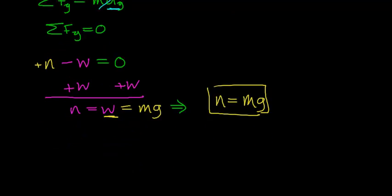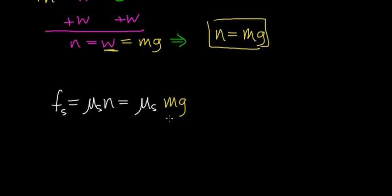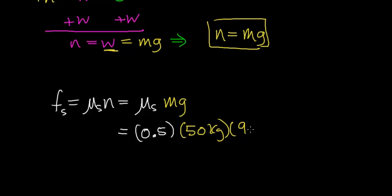Going back to our equation for static friction: the force of static friction equals the coefficient of static friction times the normal force, which equals the coefficient of static friction times mass times gravitational acceleration. In this case, the coefficient of static friction is 0.5 — a unitless number — the mass is 50 kilograms, and gravitational acceleration is 9.8 m/s². This works out to be 245 newtons.